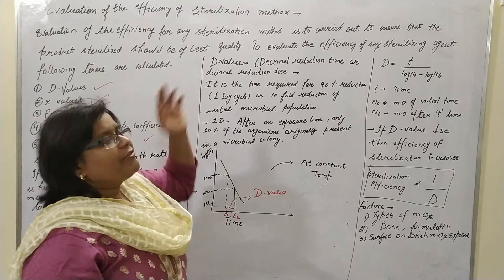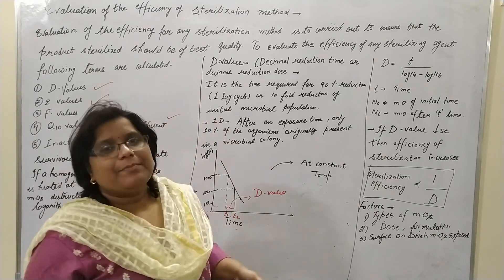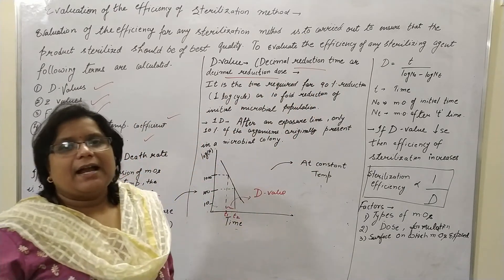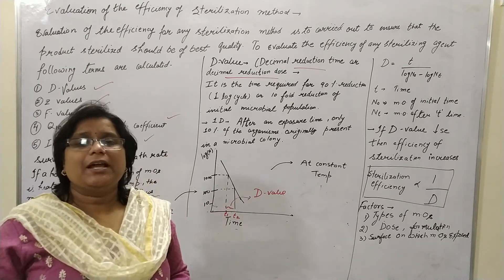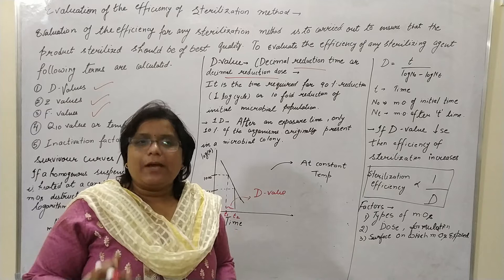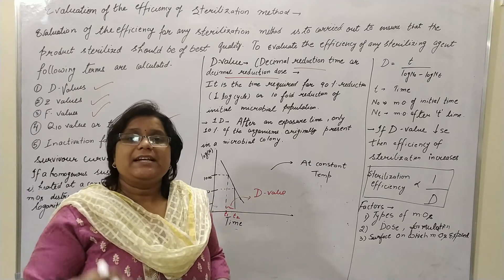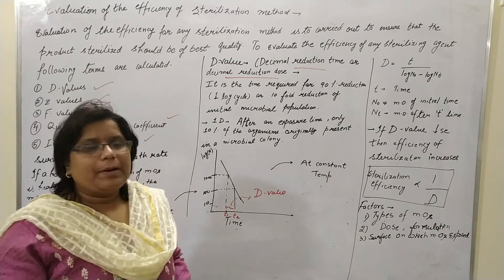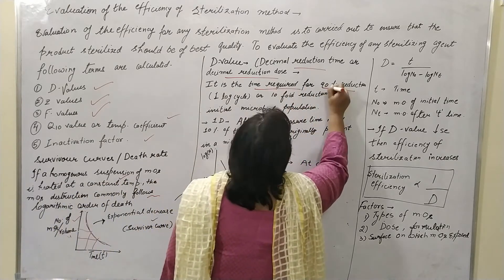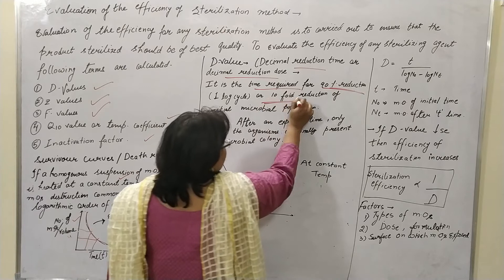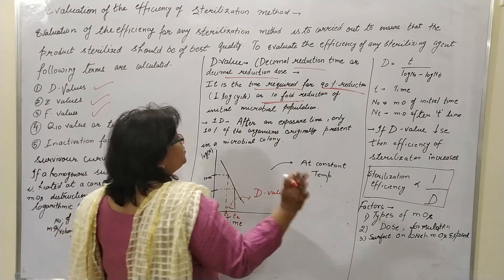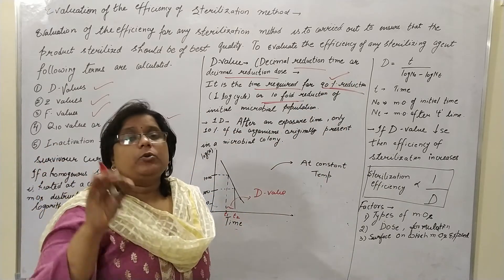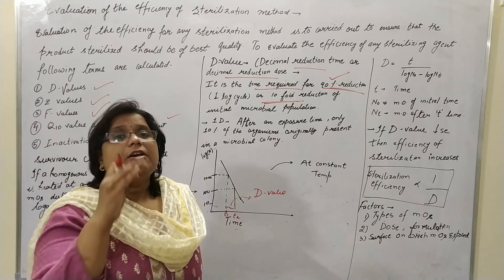Now we will discuss about the first value, that is the D value. We will discuss the survival curve of the death rate and the decimal reduction dose. The main thing is — it is very simple — because if we are introducing 90% reduction, the number of microorganisms decreases exponentially. This graph is known as the exponential graph or the survival curve.